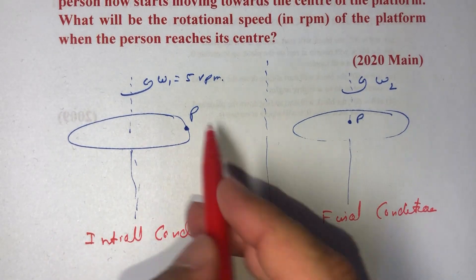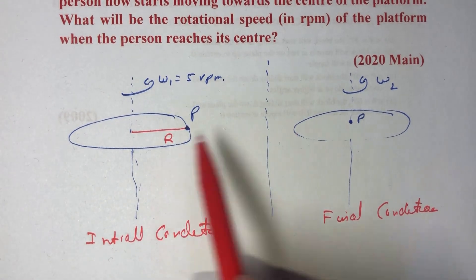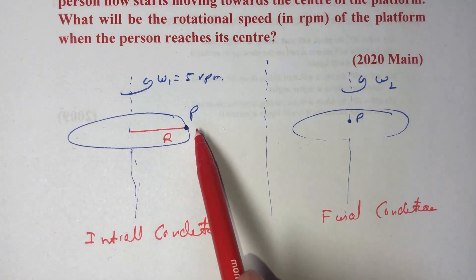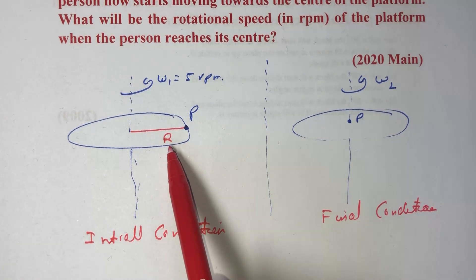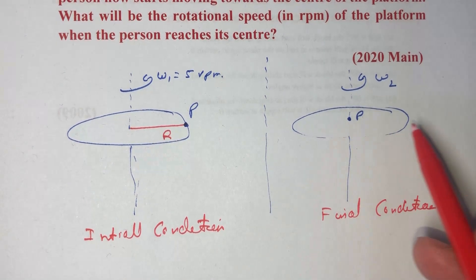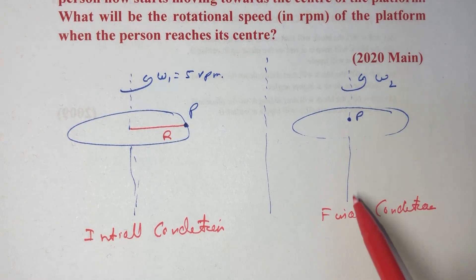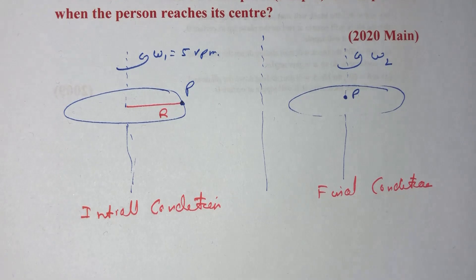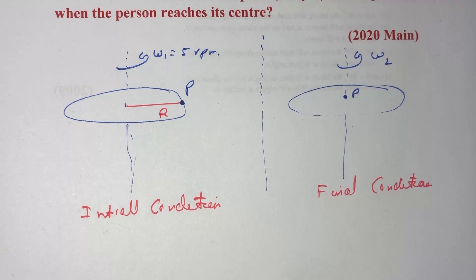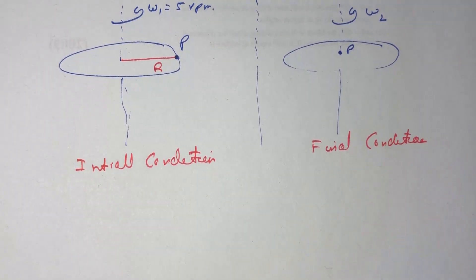We assume that r is the radius of this platform. In the initial condition, the person is standing at a distance r from the axis of rotation. In the final condition, the person is exactly on the axis. We are going to use the conservation of angular momentum — initial angular momentum equals final angular momentum — to find omega 2.